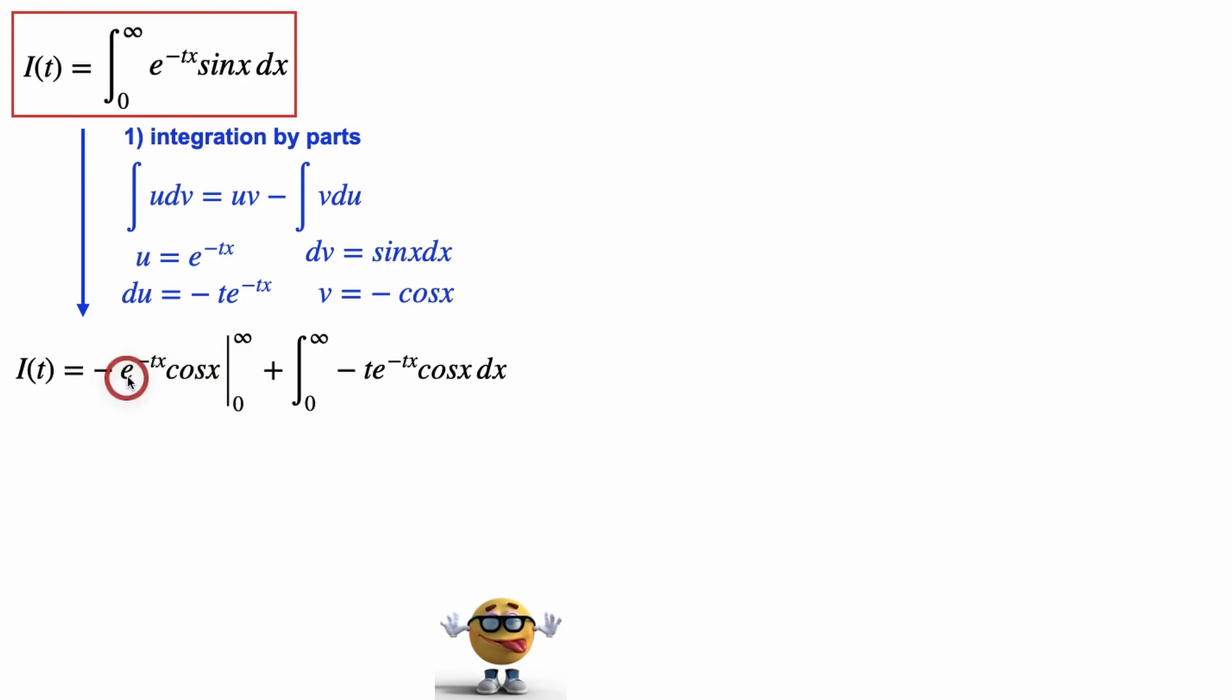To evaluate this term right here, we look at the limit as x goes to infinity, which is 0 right here on this side, because this is 0 right here, and at x equals 0, and cos of 0 is 1. So this becomes negative 1, but then we have this negative right here,